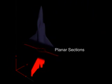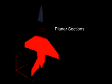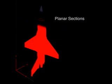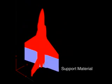Once the model is oriented, the software divides the model into evenly spaced planar sections, each measuring as small as a few thousandths of an inch. Supports are then generated for overhanging sections.